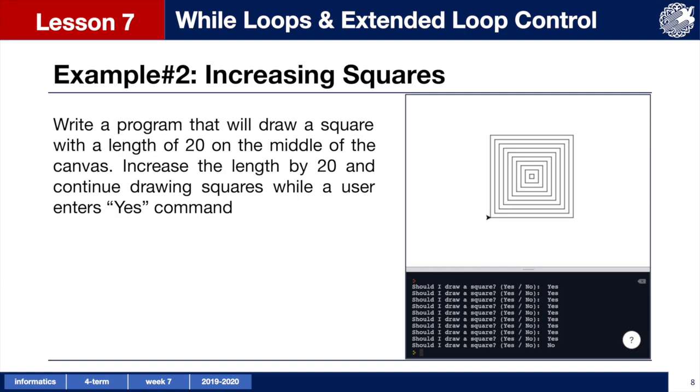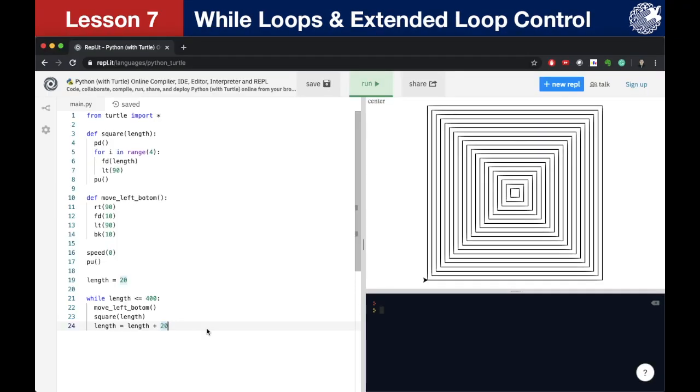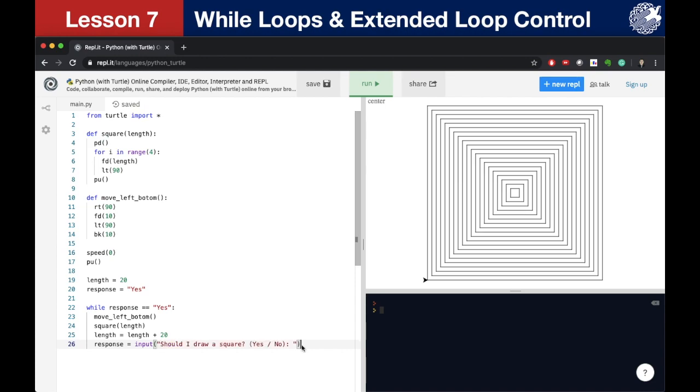Now let's change this example a little bit. We want to write a program that will draw squares while a user enters yes, and then stops when a user enters no. To write this program we must add one more variable. Let's call this variable response and assign to it the value yes. Then we must change the condition. The commands in the loop will be performed while the value of response variable is yes. And we add one more line of code at the end of the loop to avoid having an infinite loop with a condition that's always true. Notice that as long as the user enters yes, the code will keep running.